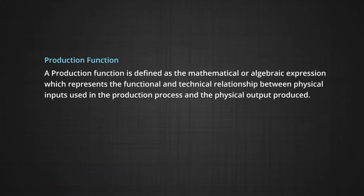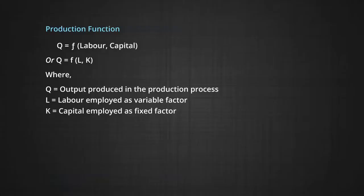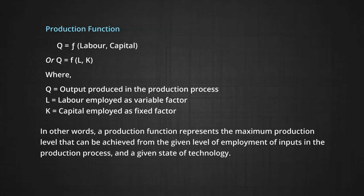A production function is defined as the mathematical or algebraic expression which represents the functional and technical relationship between physical inputs used in the production process and the physical output produced. It can be mathematically expressed as Q equals F of L and K, where Q is the output produced, L is the labor employed as a variable factor, and K is the capital employed. A production function represents the maximum production level that can be achieved from a given level of employment of inputs in the production process and at a given level of technology.